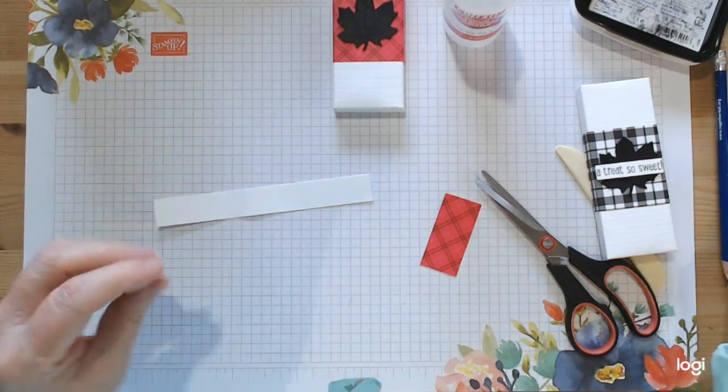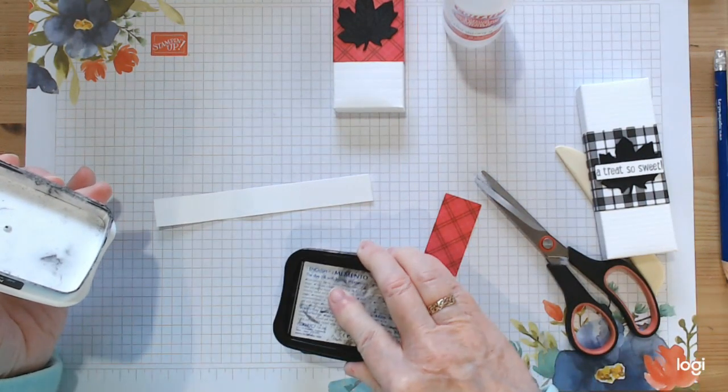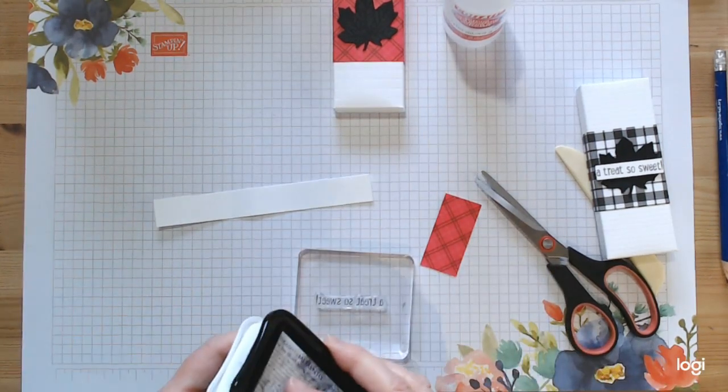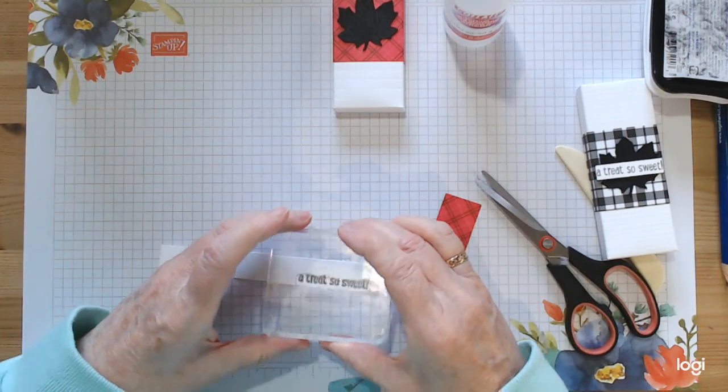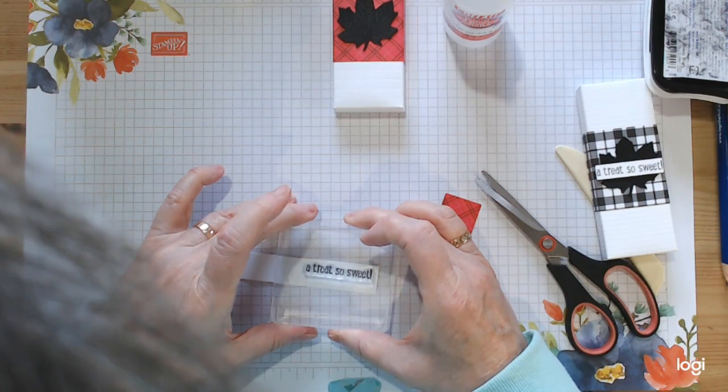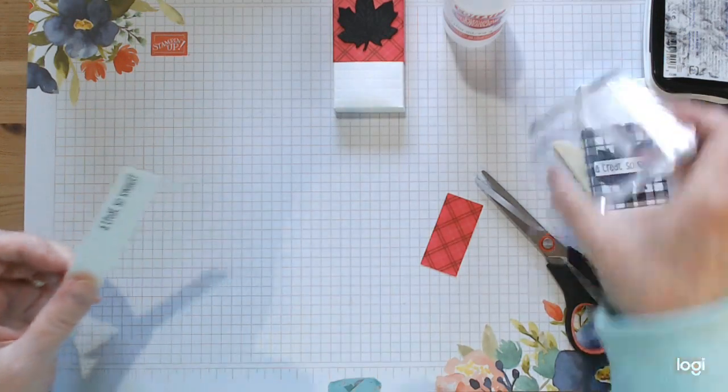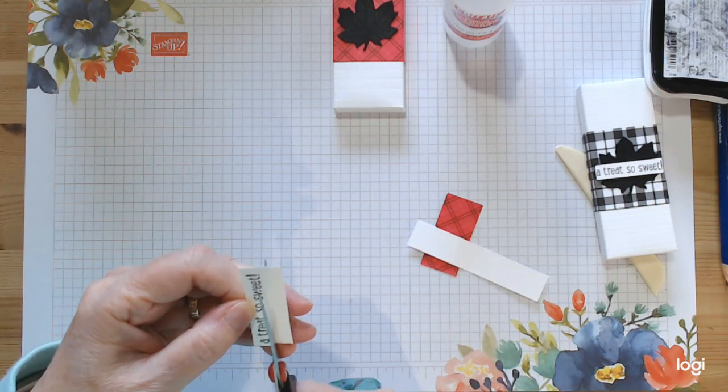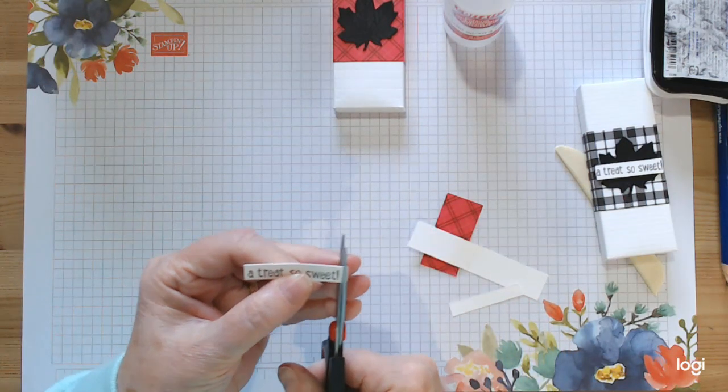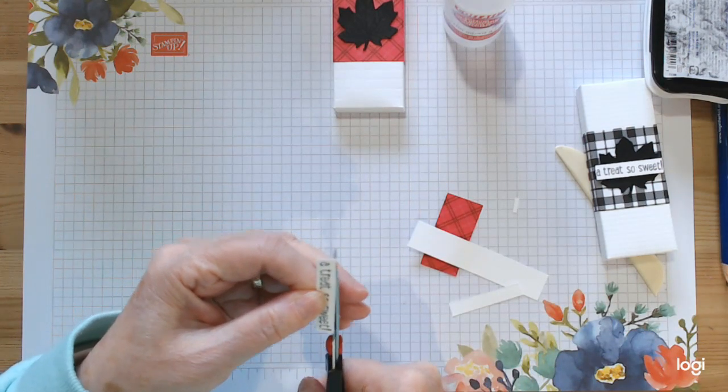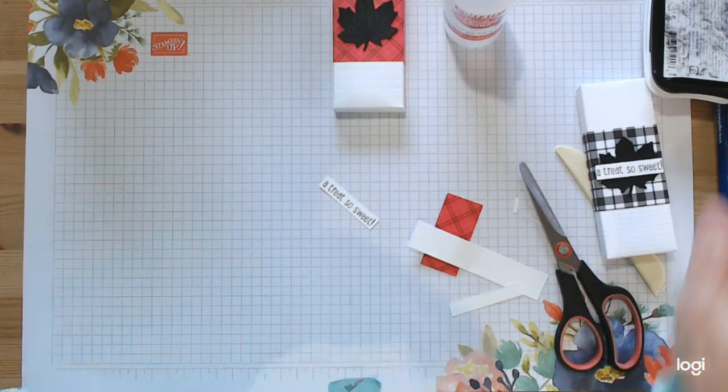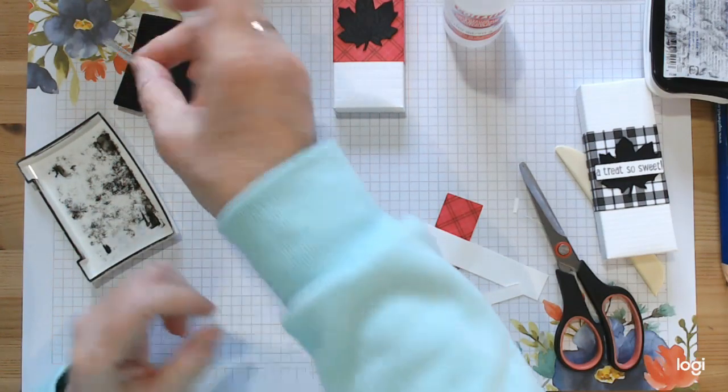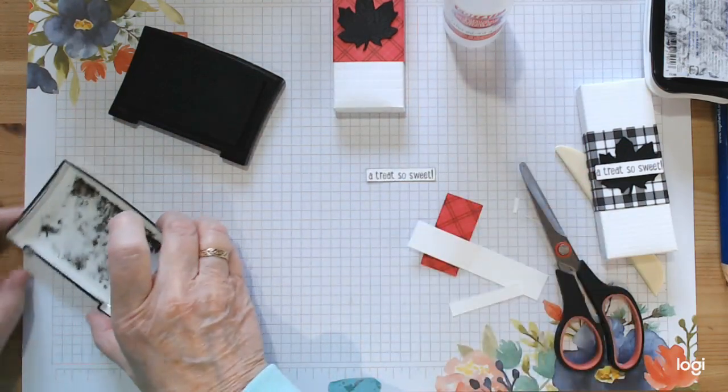You can pull the leaves up just to give it a wee 3D look. So just a wee smear in the center. You could curl that up before you stick it down if you want. So you just need your wee scrap now and the stamp and your Memento. Give it a good ink and just line it up.